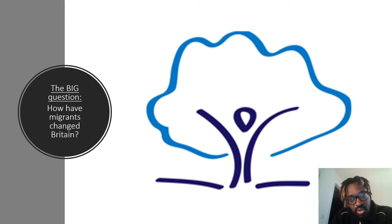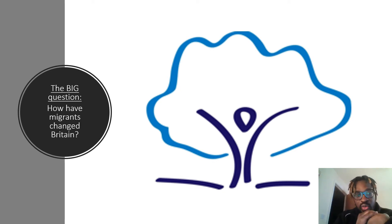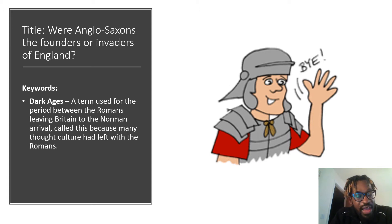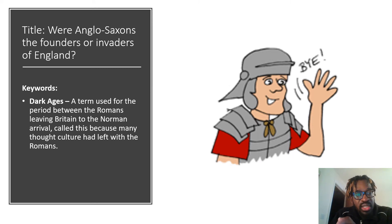So last lesson, you'll see the big question will always remain the same. Last lesson you saw it said, 'How have migrants changed Britain?' And that's always going to be the overarching inquiry question. For this particular lesson, the title you're going to write in your books is: 'Were Anglo-Saxons the founders or invaders of England?' The key word is the Dark Ages — the period of time between the Romans leaving Britain and the Norman arrival.